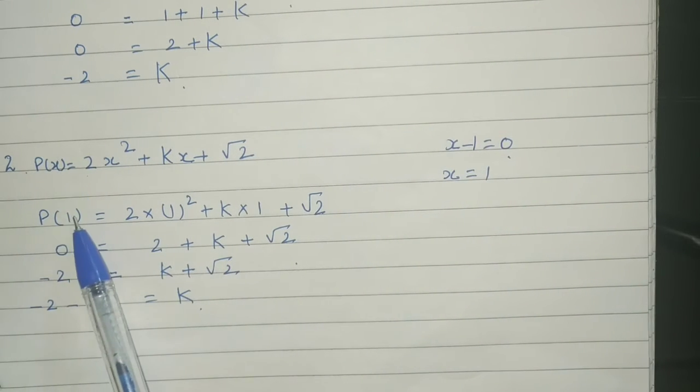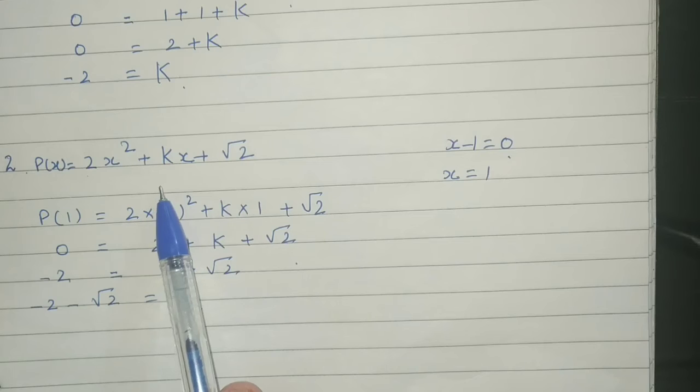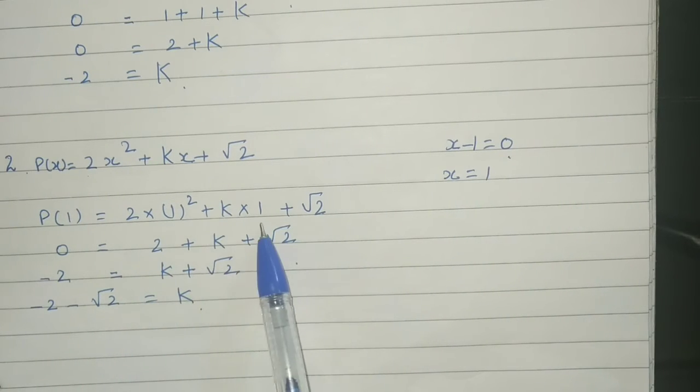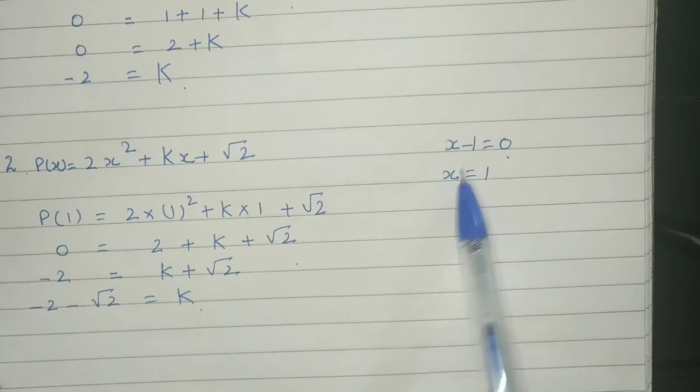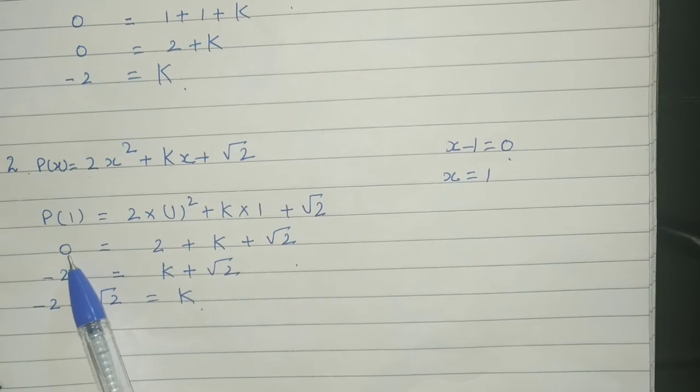Where there is x, put the value of x. Here we are going to use the value of x is 1. By using this value of x, polynomial must be equal to 0.